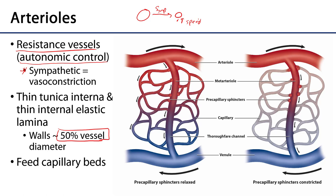Arterioles feed into capillary beds. Whether they pass through metarterioles is somewhat debatable and controversial. Going through these capillary beds there are a series of pre-capillary sphincters — smooth muscle under autonomic control. If these sphincters are relaxed, blood is free to flow through the capillary beds and we have exchange of materials.